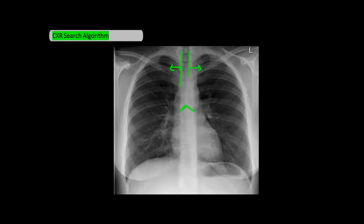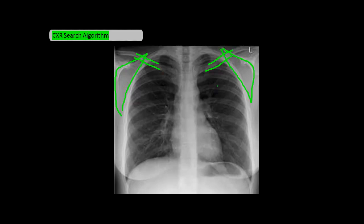Moving on to B, which is for bones. You want to look for symmetry between the clavicles — I'm highlighting the lower and upper borders of the clavicles here. I also want to look at the scapula, outlining its borders on both the right and left sides, as well as the humerus — which you can't actually see in this film — and the ribs.